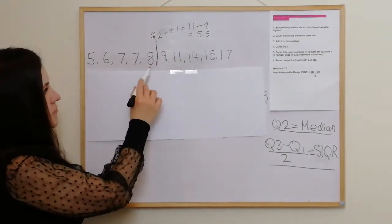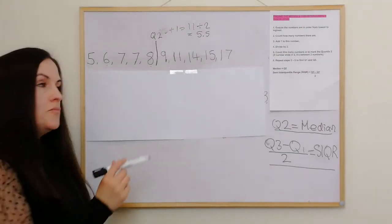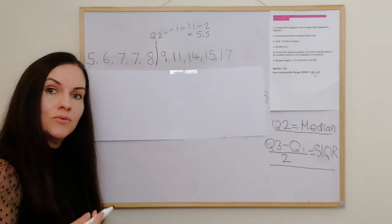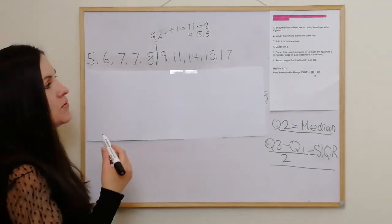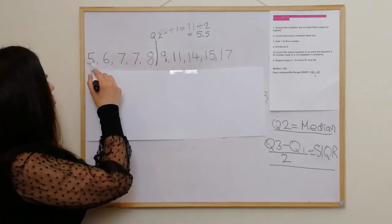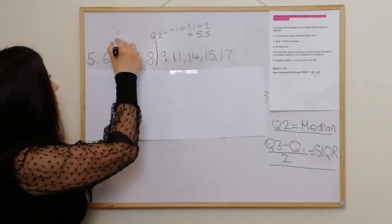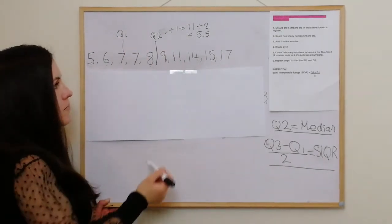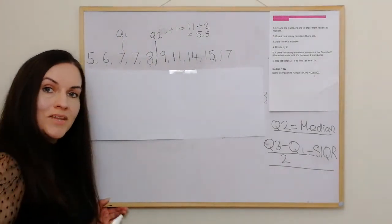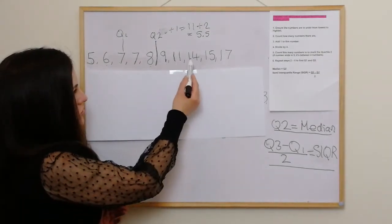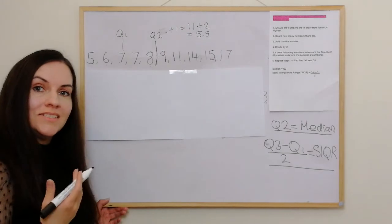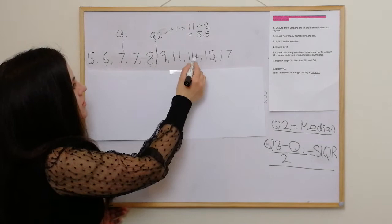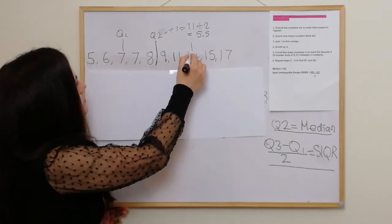Then we repeat it to get the first quartile. We count how many numbers — there's 5. We add one to get 6 and divide by 2, which is 3. So we count 1, 2, 3 — and that is quartile one. We then do the same with the upper half. There's 5 numbers, add one to get 6, half that which is 3. Count 1, 2, 3 — and that is Q3.